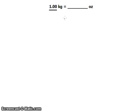1 kilogram is equivalent to 2.2 pounds approximately, and 1 pound is equivalent to 16 ounces. That's very basic.